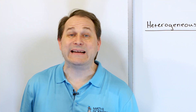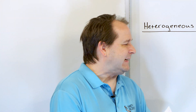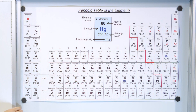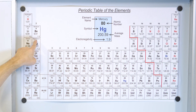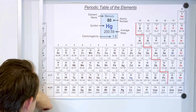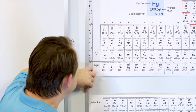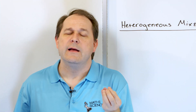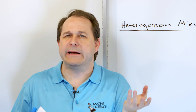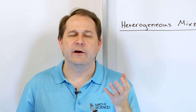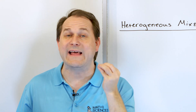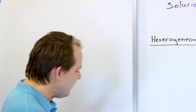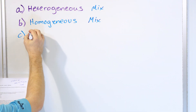Part C: magnesium — the element Mg on the periodic table. Is it a homogeneous mixture, heterogeneous mixture, or pure substance? Magnesium atoms are not mixed with anything else. They're a unique atom on the periodic table. So magnesium is a pure substance.